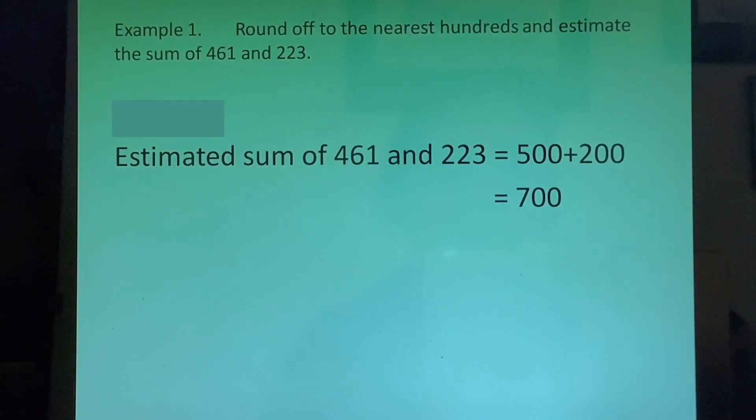Let us write in the notebook. Therefore estimated sum of 461 and 223 is equal to 500 plus 200 which is equal to 700.